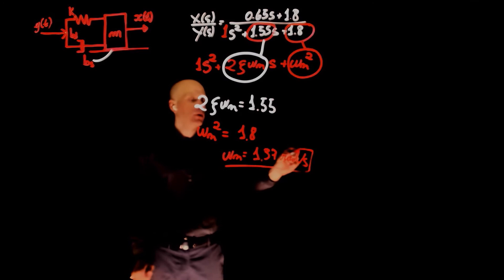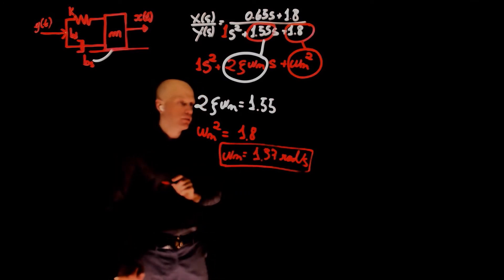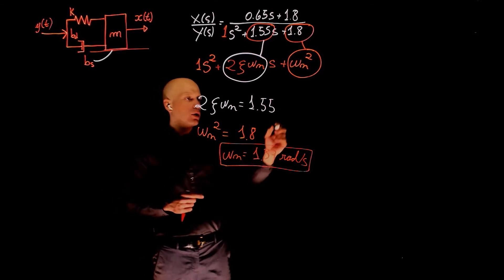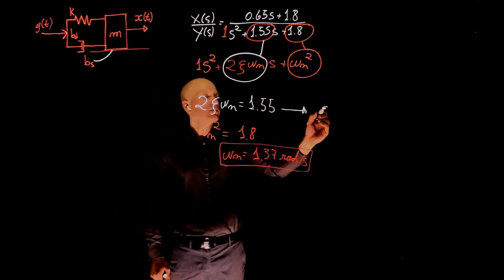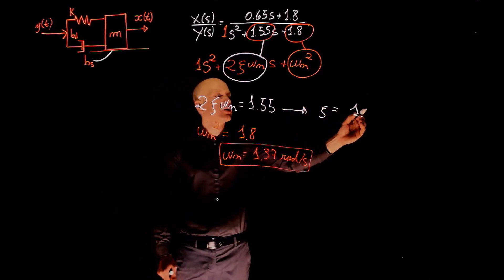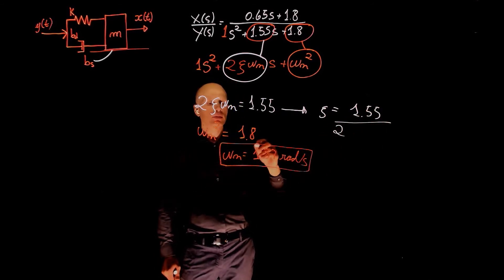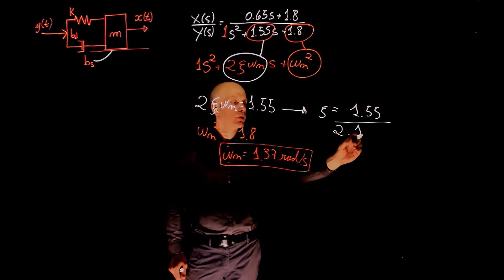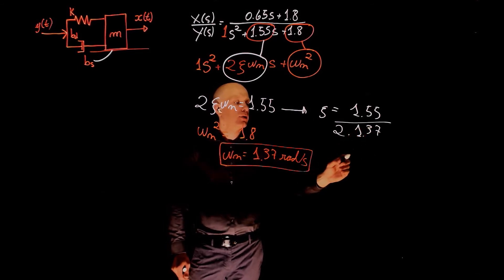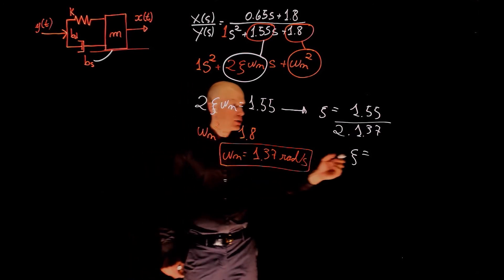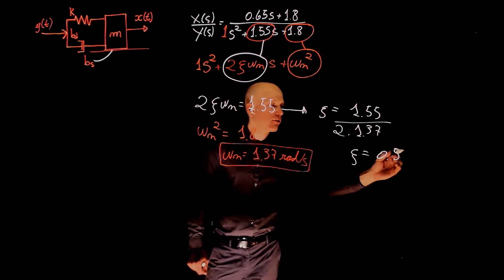Which gives omega n as 1.37 radians per second, the natural frequency of the undamped system. And replacing this value in the other equation we got here, we can find zeta as 1.55 divided by 2 times omega n, 1.37. The damping ratio is 0.57.